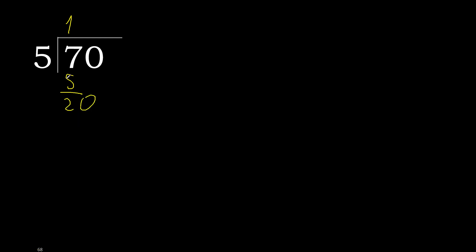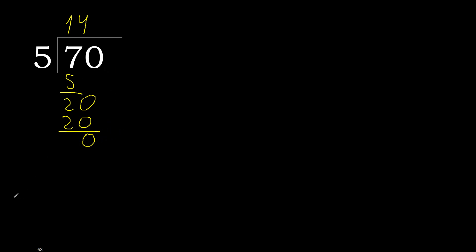Next, bring down 0, making 20. 5 multiplied by 5 is 25 — that is greater. 5 multiplied by 4 is 20 — that is not greater. 20 minus 20 is 0. The remainder is 0, so we finish here.